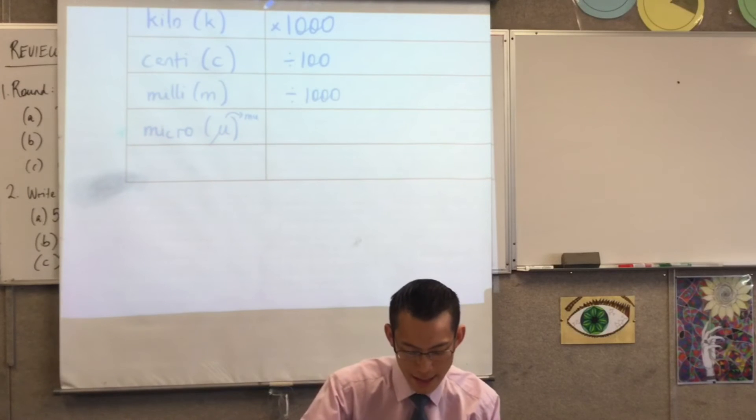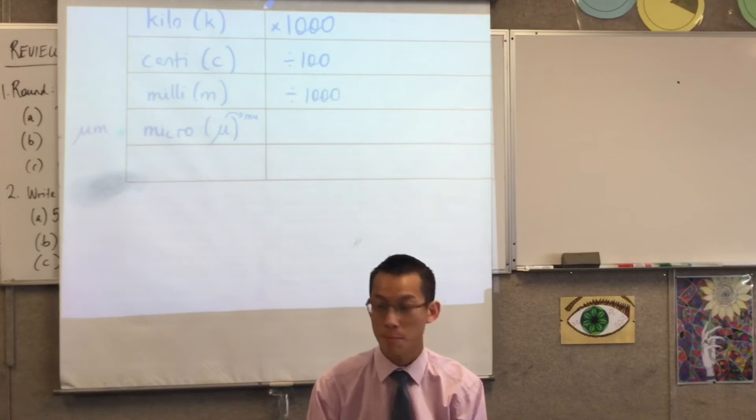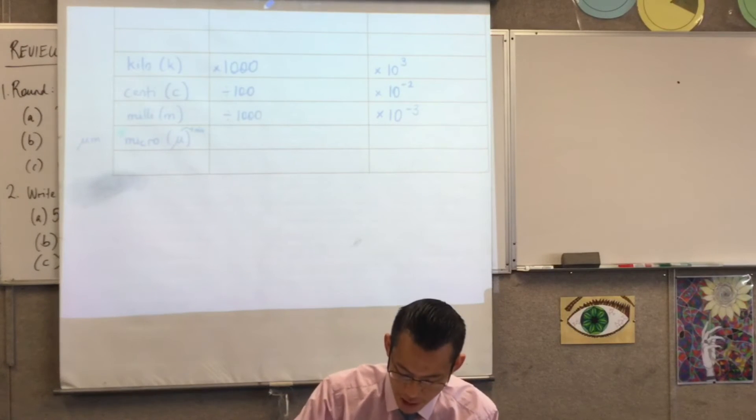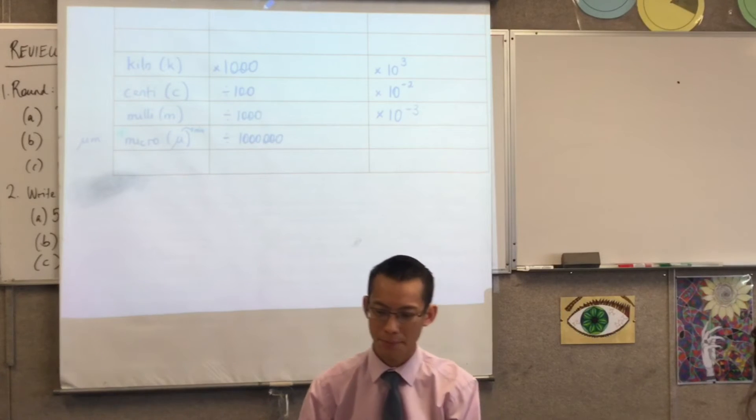So, you might see this on medications sometimes. Sometimes you'll see that, and that's micrograms. So, micrograms are divided by a million. That's a really, really small number.